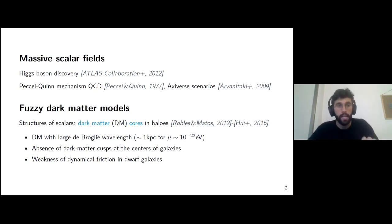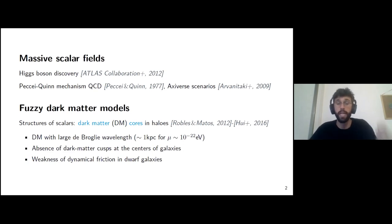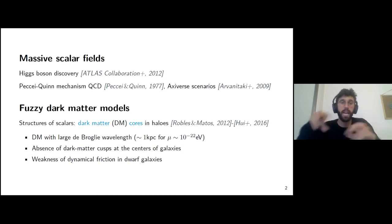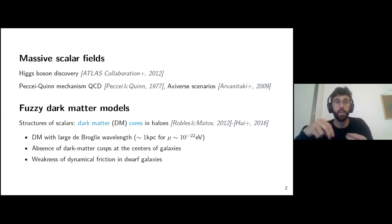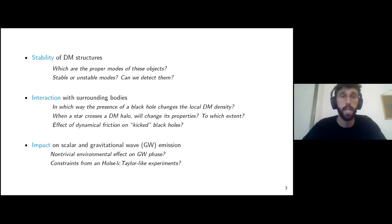In our study with collaborators, we use this fuzzy dark matter model. Fuzzy is there because the wavelength of this object is around a kiloparsec. This is because the mass of these scalar fields is extremely small compared to typical masses in the Standard Model of particle physics — around 10 to the minus 22 electron volts. Another reason to use this FDM model is that the dynamical friction in dwarf galaxies is smaller than what is predicted by particle-like physics.